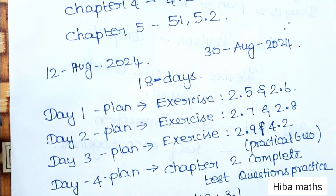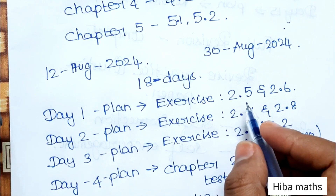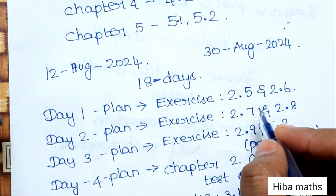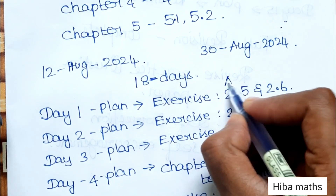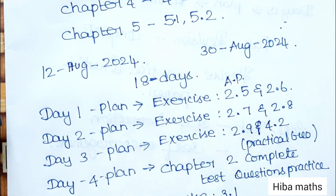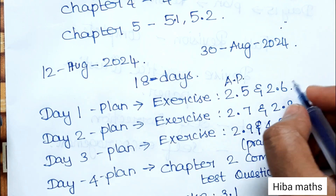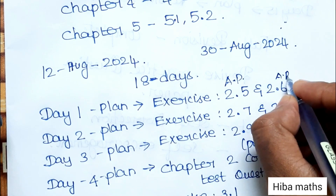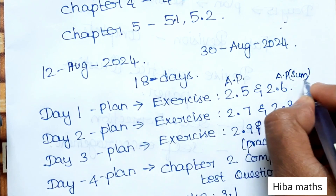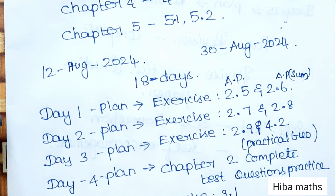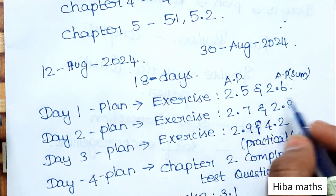How do we plan? Day 1, we will do exercises 2.5 and 2.6. Exercises 2.5 and 2.6 are on Arithmetic Progression (AP). Exercise 2.6 is also AP — the sum of AP. If you know two formulas, you can finish these two exercises.